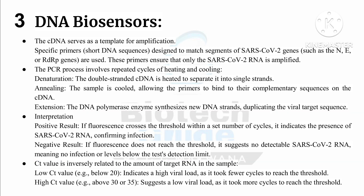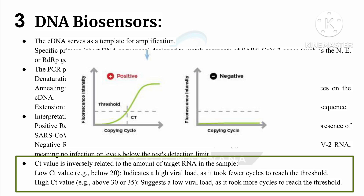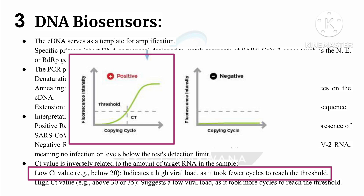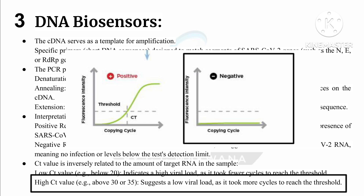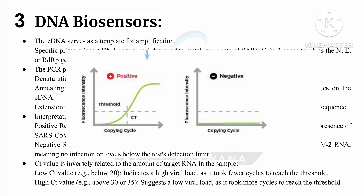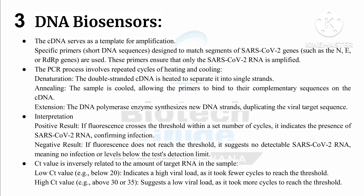Another detection signal is the CT value, which is inversely related to the amount of target RNA in the sample. A low CT value indicates a high viral load, as it took fewer cycles to reach the threshold. A high CT value suggests a low viral load, as it took more cycles to reach the threshold. This is how the DNA biosensor works.